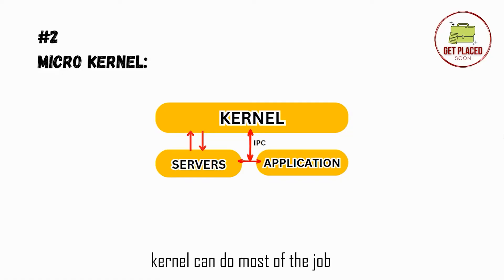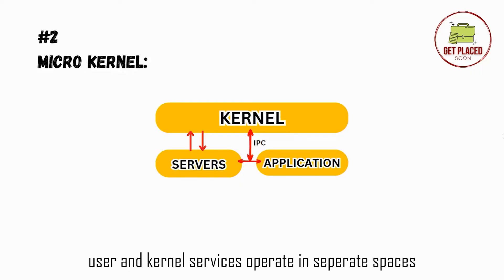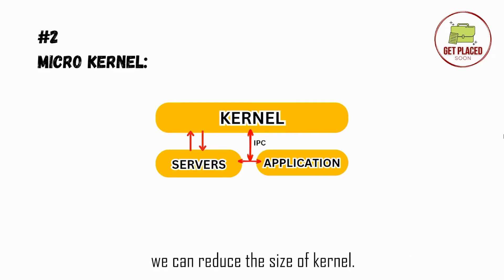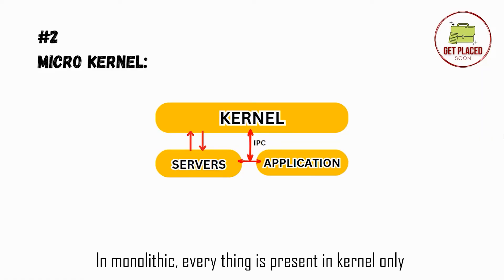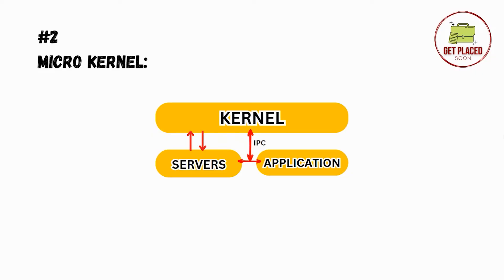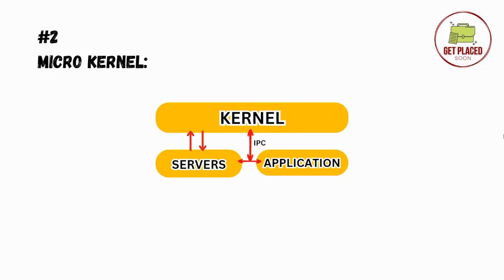Moving ahead, we have microkernel. A microkernel is a stripped-down version of a monolithic kernel. Here you can see there is something called servers. We have two modes — user mode and kernel mode. User and kernel services operate in separate spaces, which allows us to reduce the size of the kernel. Unlike the monolithic approach where everything is in the kernel, here we divide it into user mode and kernel mode. The user mode is essentially the servers.